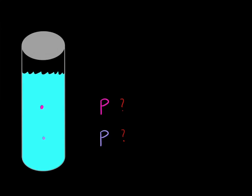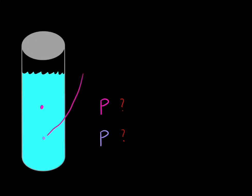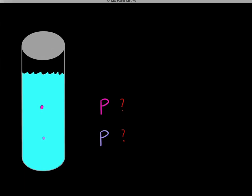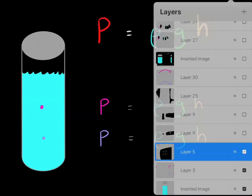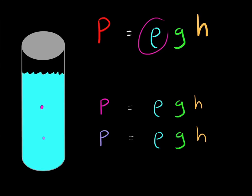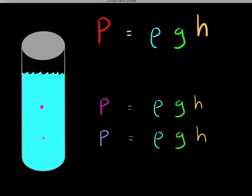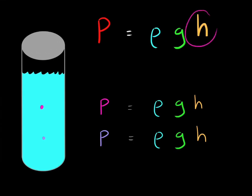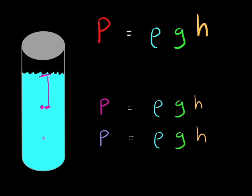Let's say we were trying to find the pressure at a particular point in a liquid and compare it to the pressure at another point. To determine the pressure at a given point in a liquid, all you have to use is this simple equation: the pressure equals the density of that liquid multiplied by g, the acceleration due to gravity, multiplied by h, which represents the height from the point you're interested in to the surface of that liquid.